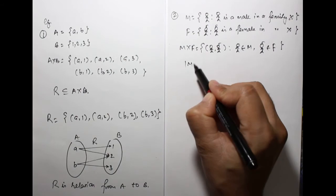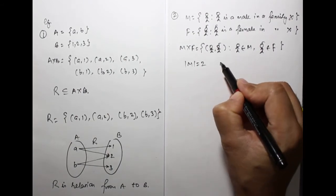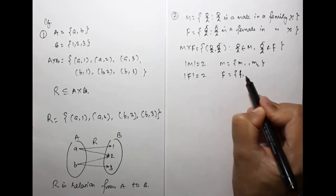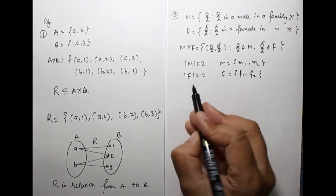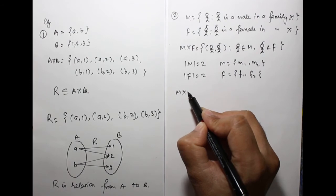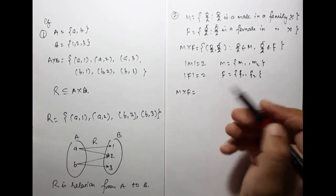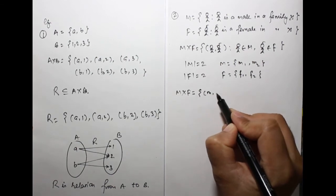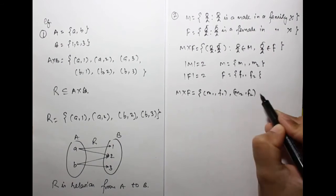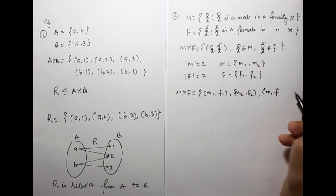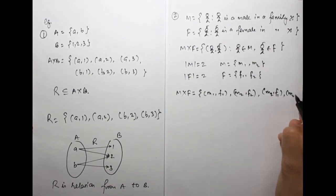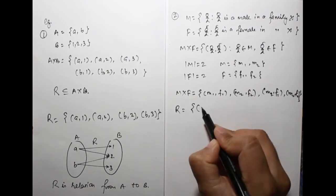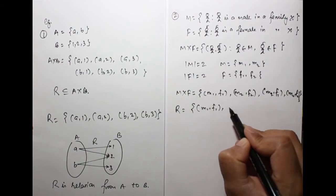For example, if the family has two males M1, M2 and two females F1, F2, then M cross F equals {(M1,F1), (M1,F2), (M2,F1), (M2,F2)}. A relation from M to F is any subset of M cross F. For instance, take R equals {(M1,F1), (M2,F2)}. This means M1 is related to F1 and M2 is related to F2.